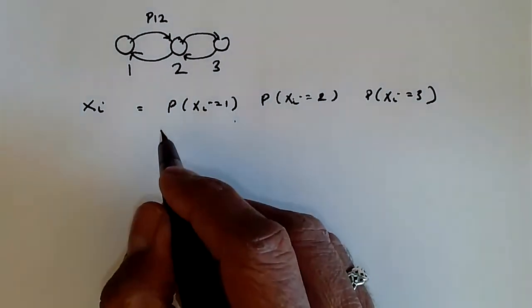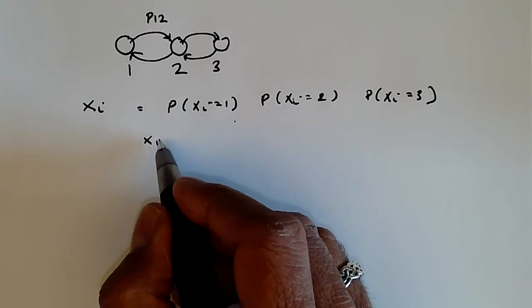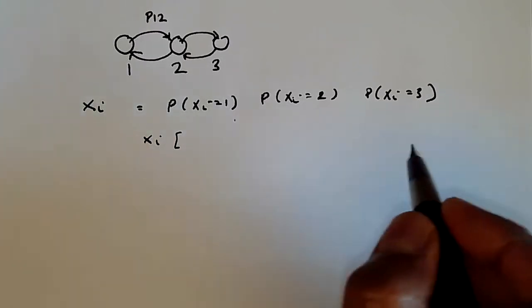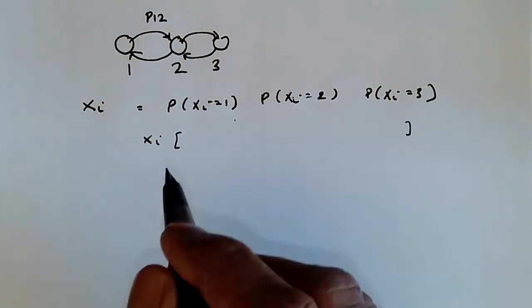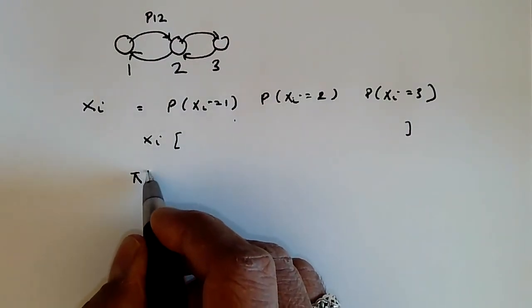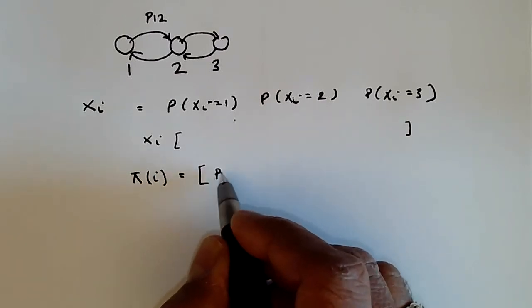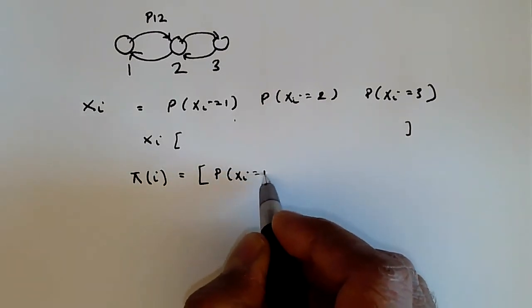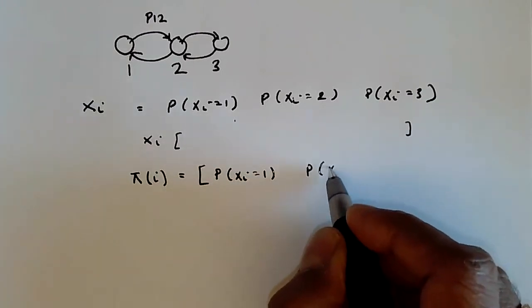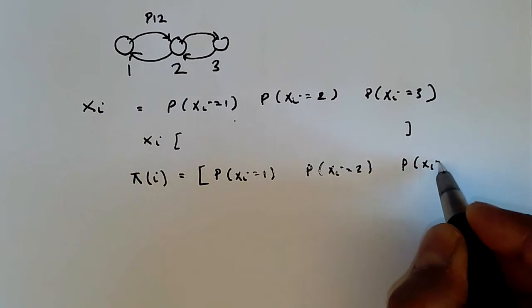And in the earlier segment, we'd use this notation x_i equals these three probabilities in the vector, but I'm going to be more precise now and introduce this new term π. And π_i is defined to be exactly this vector: P(x_i = 1), P(x_i = 2), and P(x_i = 3).